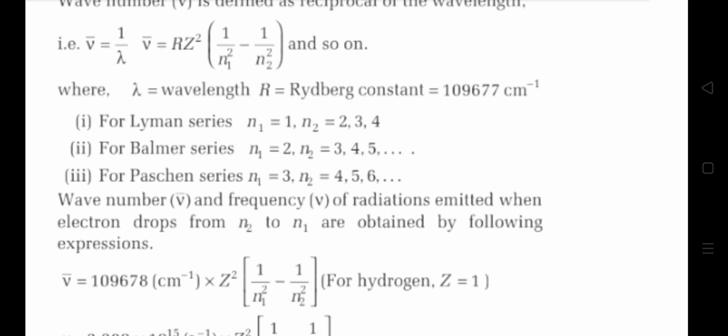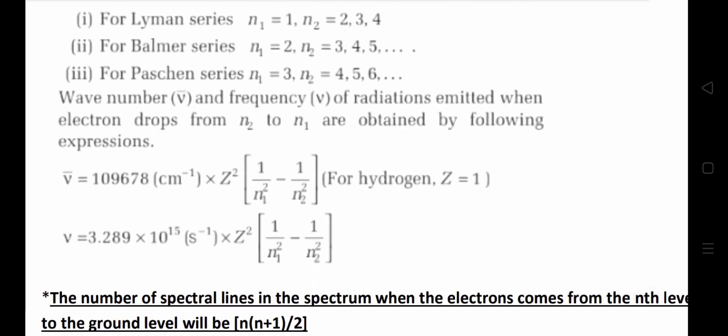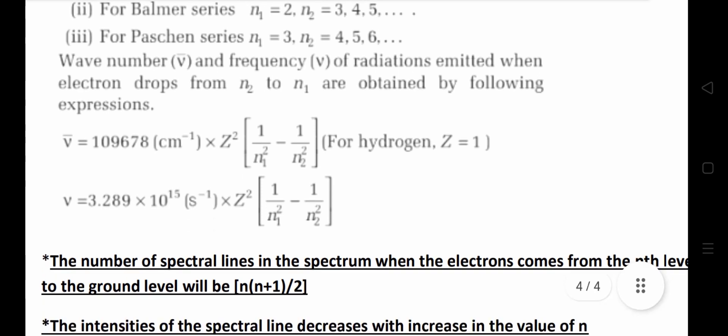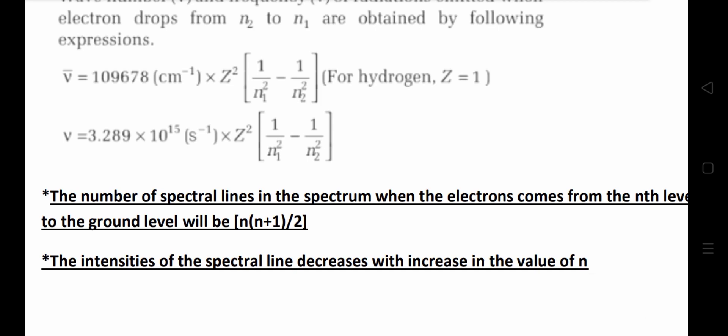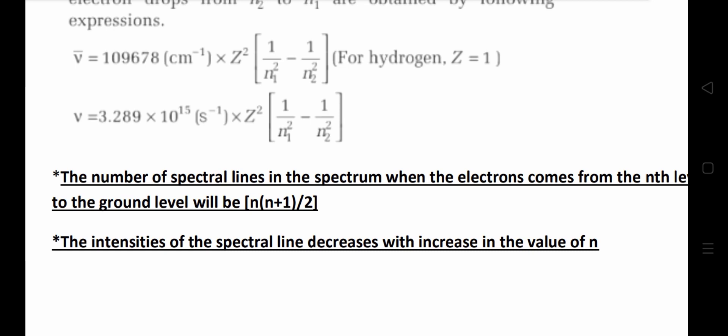The wave number and frequency of radiation emitted when an electron drops from n2 to n1 can also be calculated using: wave number equals 3.29289 times 10 to the power 15 per second, times z-squared, times (1 divided by n1-squared minus 1 divided by n2-squared). From this we can calculate easily. Also important: the number of spectral lines in the spectrum when the electron comes from the nth level to the ground level is equal to n times (n plus 1) divided by 2. Questions can be expected from this formula.